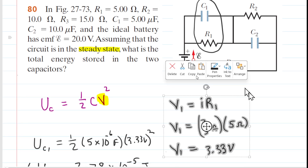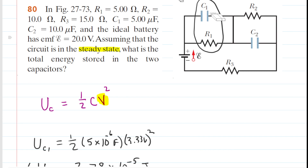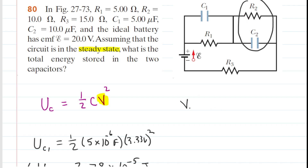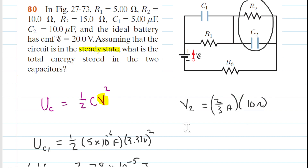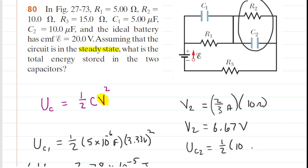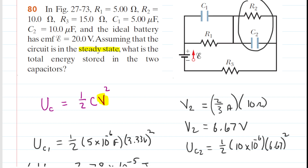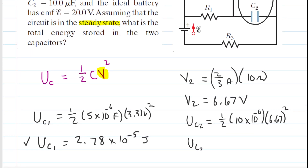We perform a similar calculation for the energy stored in C2. Looking at C2, it is in parallel with R2. Using the same strategy, we calculate the potential difference across R2 by multiplying the current by R2, which is 10 ohms, giving 6.67 volts. We then compute one-half times C2 — 10 times 10 to the minus 6 farads — times 6.67 volts squared. The potential energy stored in C2 is approximately 2.22 times 10 to the minus 4 joules.